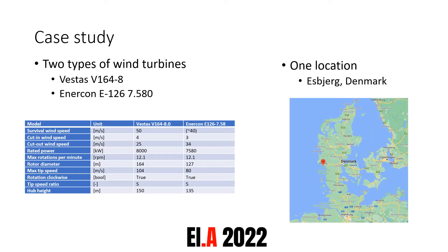Our case study in this paper is set in Espja, Denmark, and we used this environment for our digital twin. In addition, we include two wind turbine models: the Vestas V164 and the Enercon E126. These two wind turbine models were chosen due to similar power ratings, size, and cut-in and cut-out specifications.